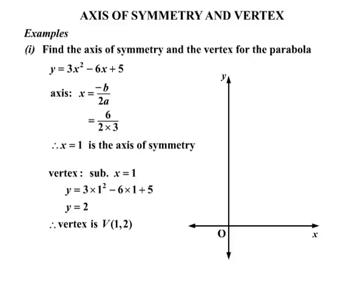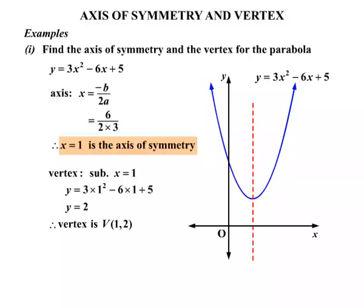So just to show that on a diagram. It didn't ask you to sketch it, but it's always a good idea to understand what we're looking at. There's our parabola. That's what it would look like. y equals 3x squared minus 6x plus 5. The axis of symmetry, straight down the middle there, x equals 1. It's always a vertical line there. And the vertex in this case, that point there, with coordinates 1, 2.